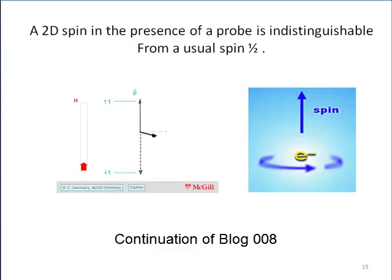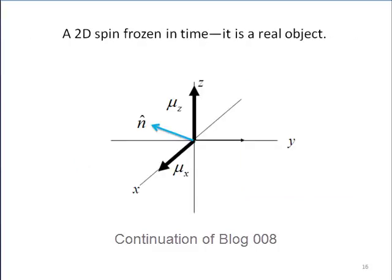Without these experiments, the 2D spin would be a mathematical curiosity and nothing more. But does it all agree with the experimental data?